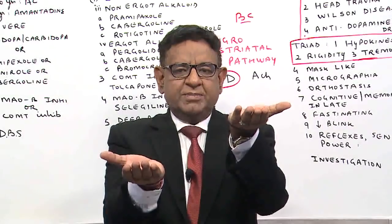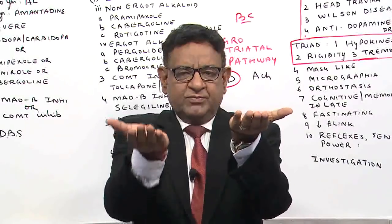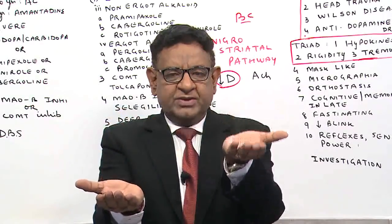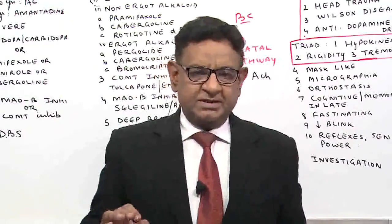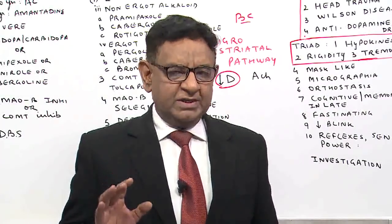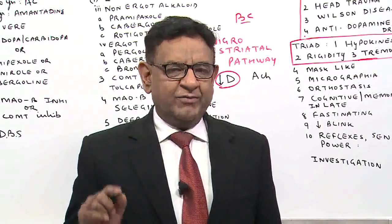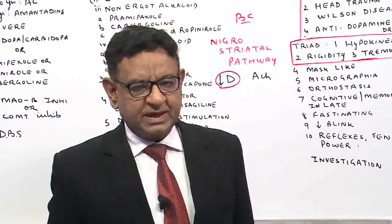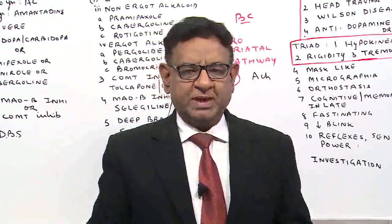Our aim of treatment is to maintain the balance. We can either give a dopaminergic drug or we can give an anticholinergic drug. This is the basic fundamental, and once you have understood this basic physiology, you know why we will be using dopaminergic or anticholinergic drugs in the treatment of Parkinson.